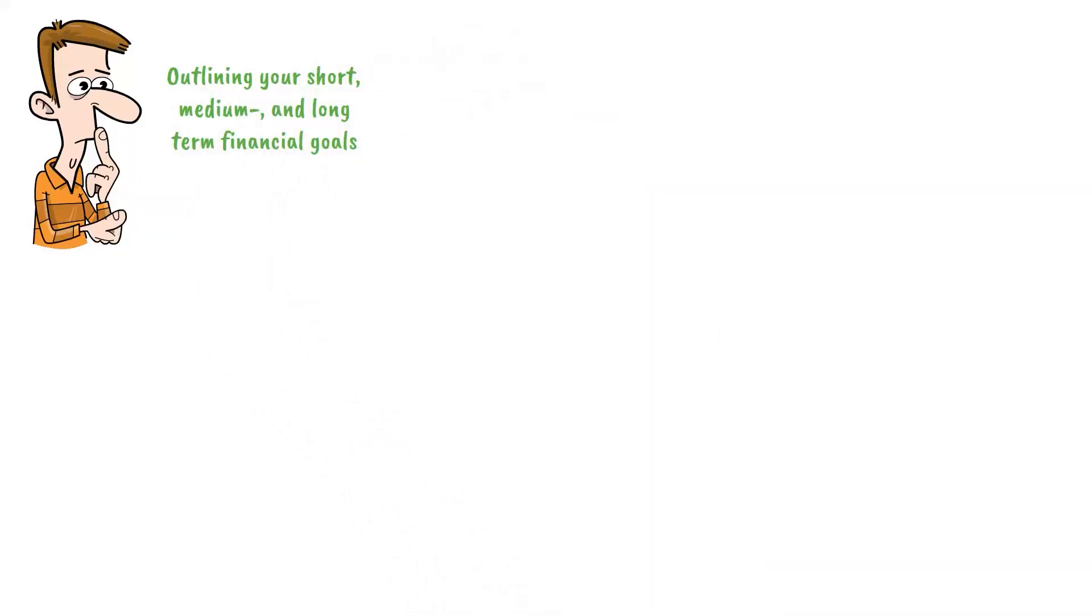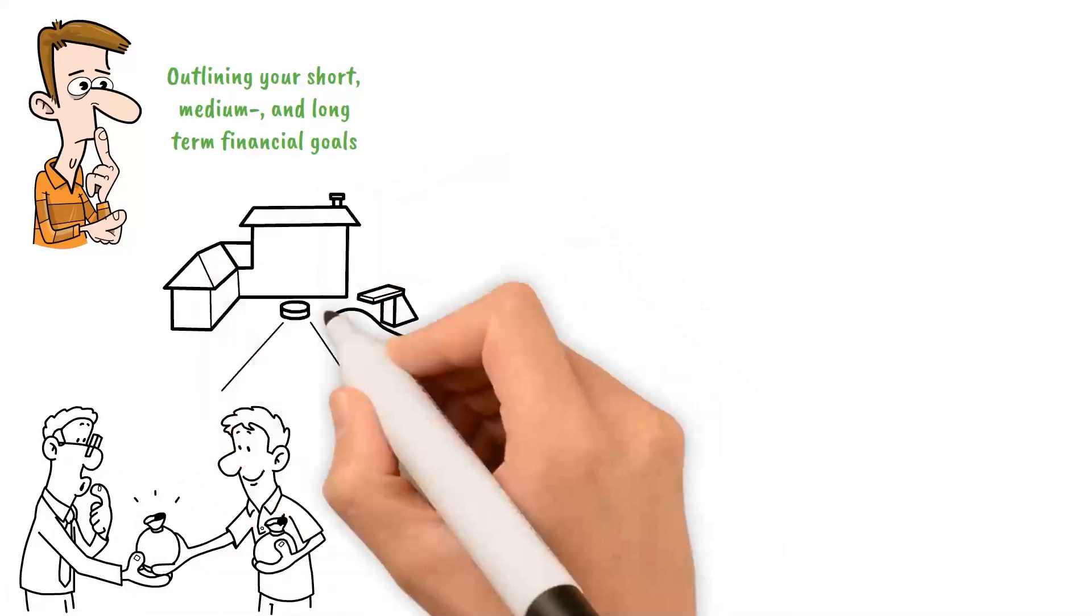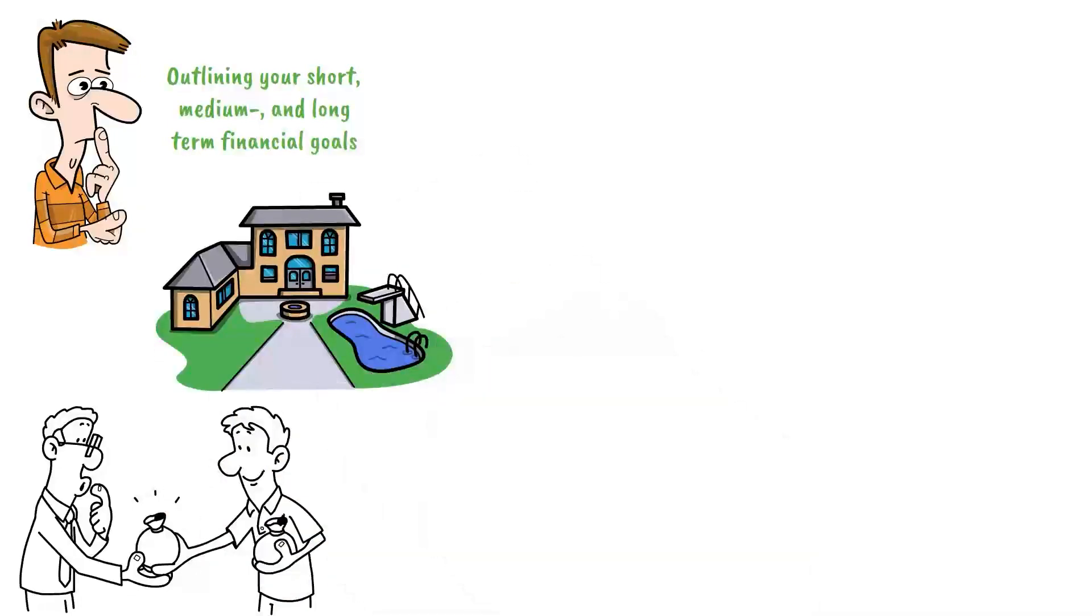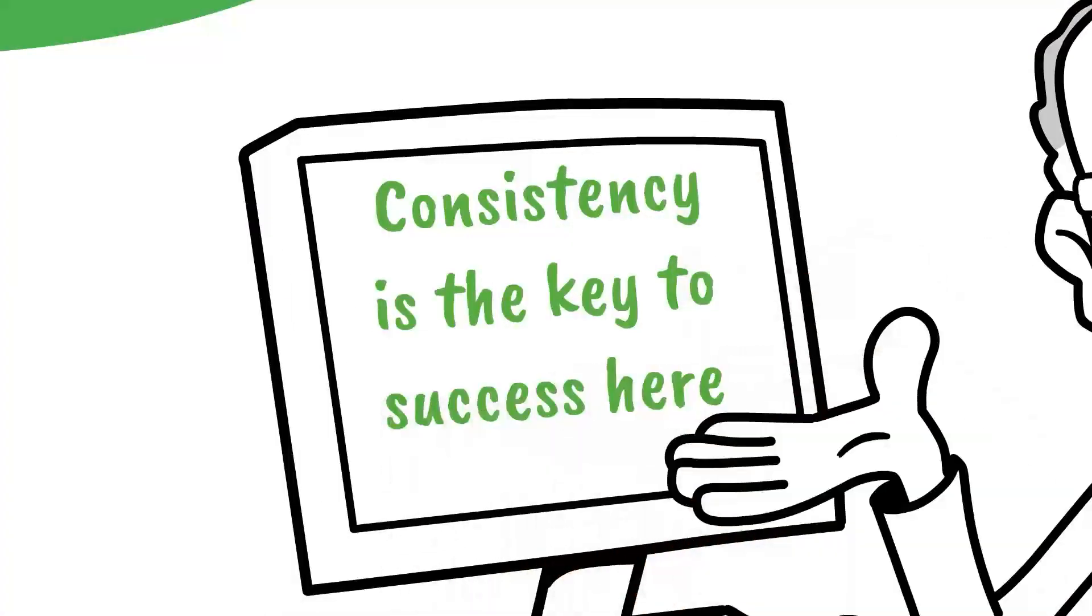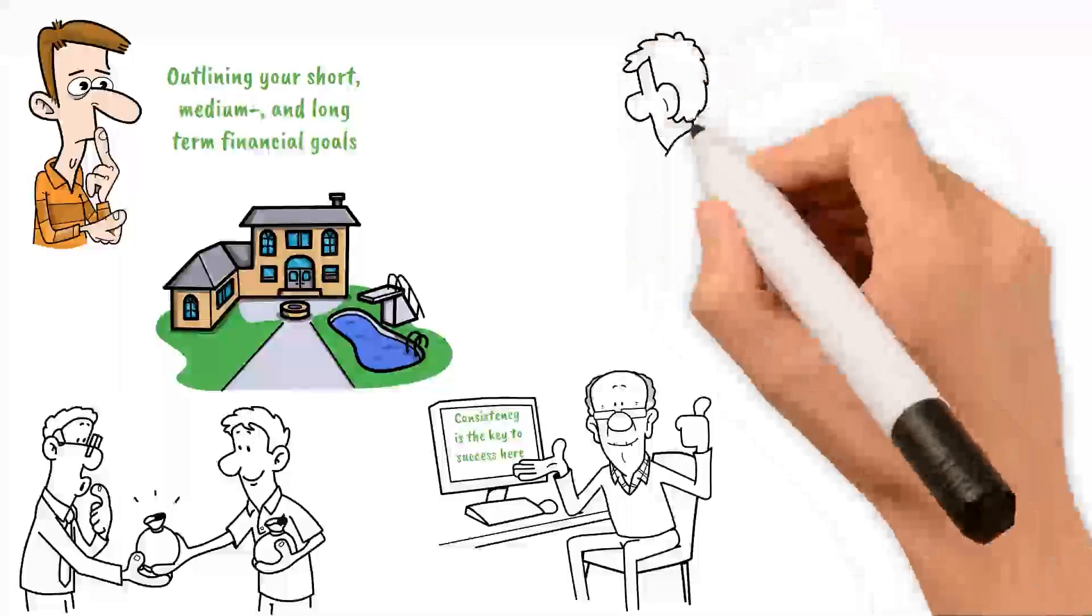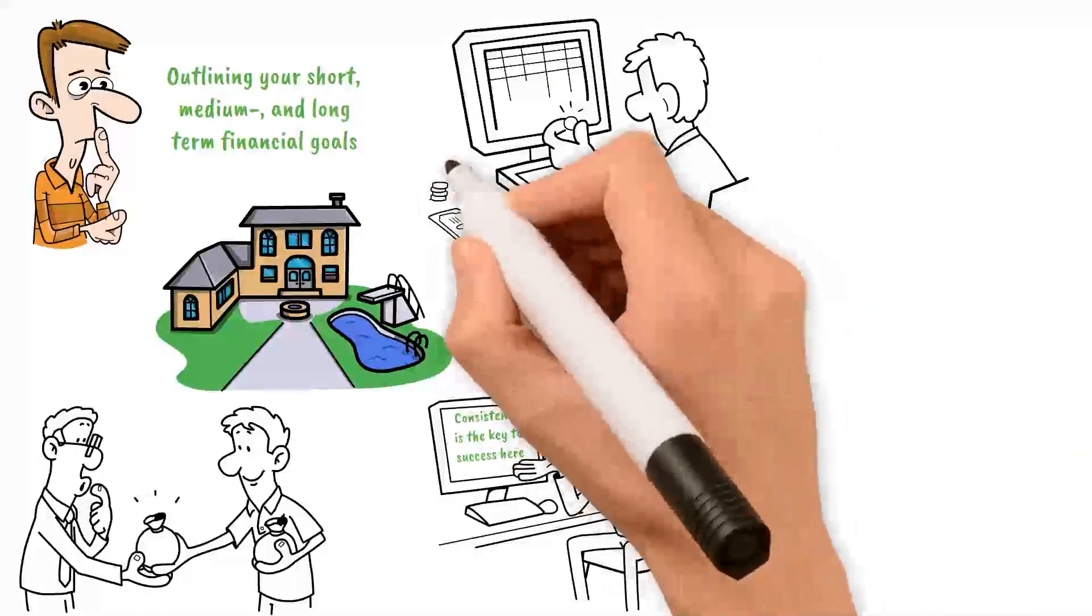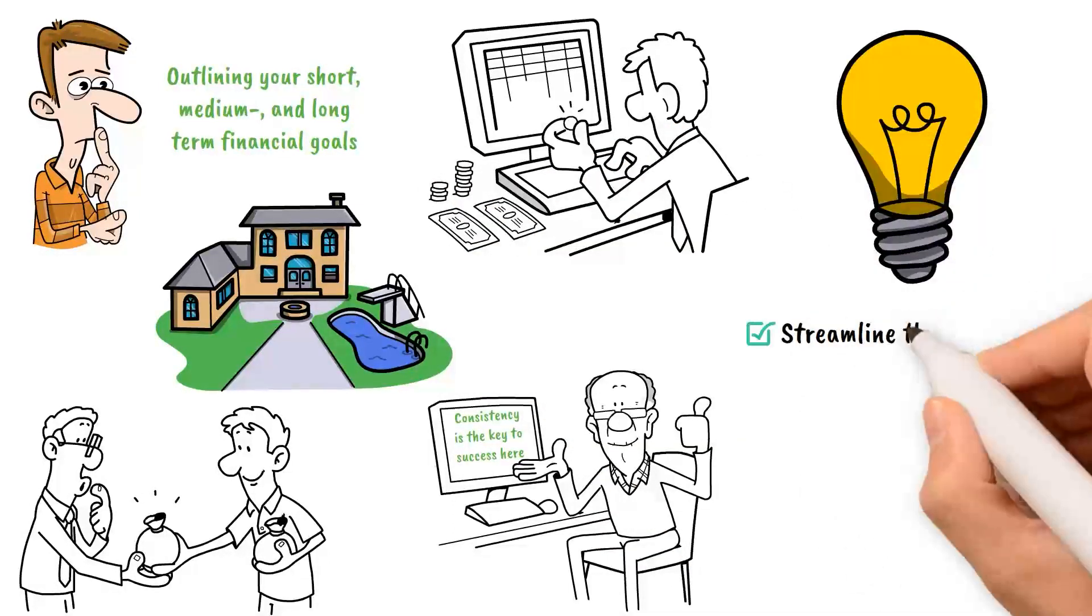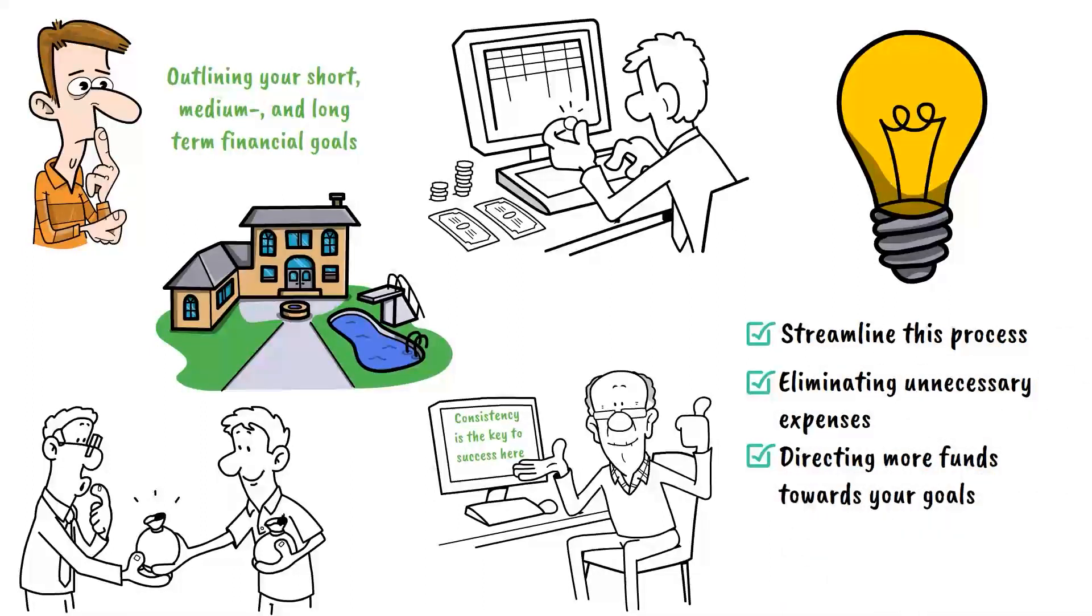Short-term goals could include saving for a vacation or paying off a small debt. Saving for a down payment on a house or creating an emergency fund are examples of medium-term ambitions. Long-term ambitions are frequently tied to retirement. Remember that consistency is the key to success here. Review your goals on a regular basis and always examine your spending patterns to ensure that they are in line with what you want. The idea of minimalism will help you streamline this process, eliminating unnecessary expenses, and directing more funds towards your goals.